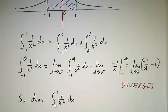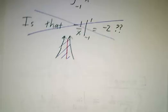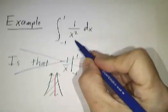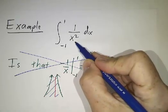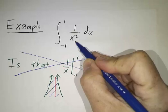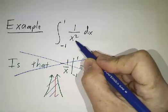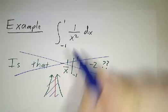Moral of the story, when you're faced with an integrand that blows up, whenever you have a place where the function you're integrating goes to infinity or minus infinity, you have to break the integral there and do an improper integral on the left and an improper integral on the right.